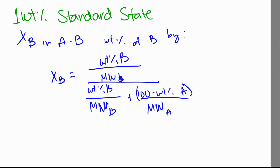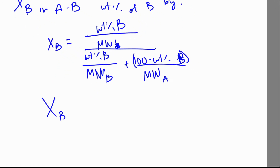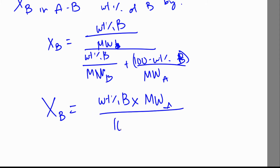In a dilute solution, we know that wt% B is much less than wt% A. So we can reduce the equation further and approximate X_B to be equal to (wt% B × MW_A) / (100 × MW_B).